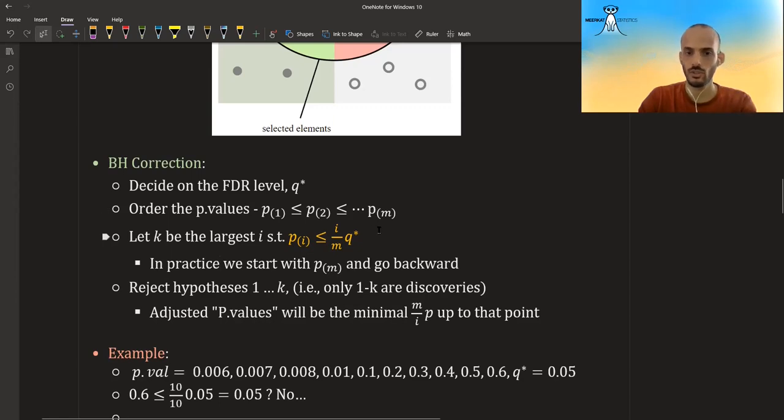If it is, then you reject all the ones that came before it. But probably for the largest P value, it won't happen, so you will go down, down, down, down, down until you get to some P value where it does happen, maybe, and then you reject all the ones that came before it. So this is the procedure.